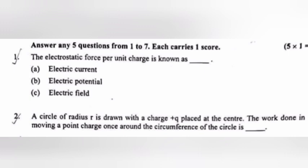Question 1: The electrostatic force per unit charge is known as dash. Answer: C. Electric field. Question 2: A circle of radius R is drawn with a charge plus Q placed at the center. The work done in moving a point charge once around the circumference of the circle is dash. Answer: Zero.